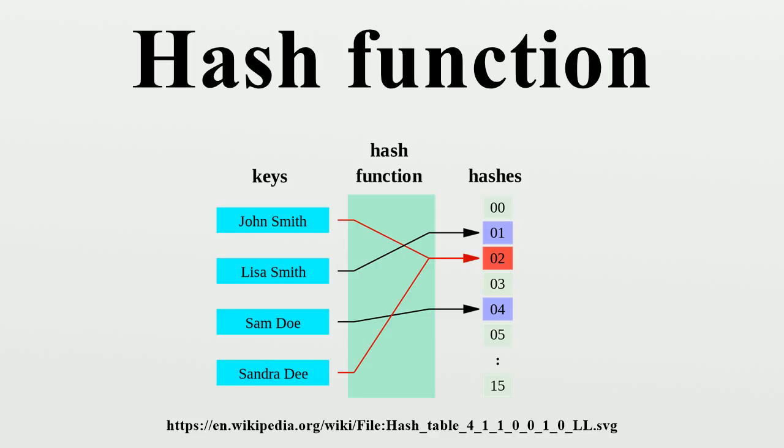For example, in SHA-1, the hash value is 160 bits and the block size 512 bits. Variable range. In many applications, the range of hash values may be different for each run of the program, or may change along the same run.